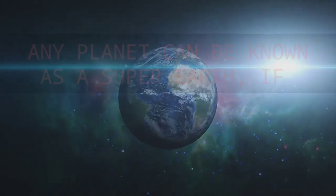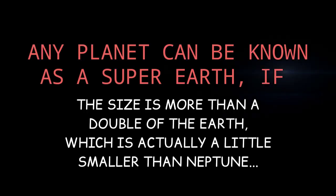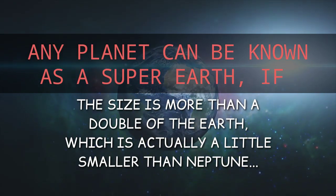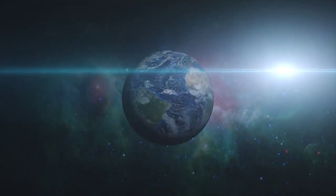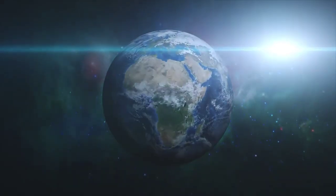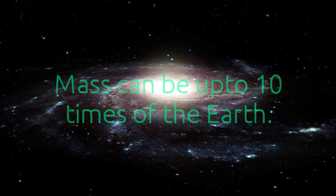What is this super earth? Any planet can be known as super earth if its size is more than double that of the Earth and it is less than the ice giants Uranus and Neptune. The mass, for example, can be up to 10 times of the Earth.